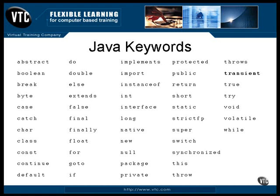A transient data item is one that doesn't need to be included when the object is serialized and packaged for transmission. The data item is considered to be temporary and not really a part of the defining data for the object — it's just a work area.